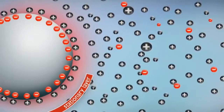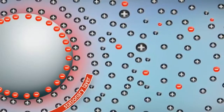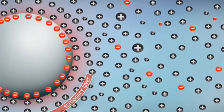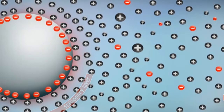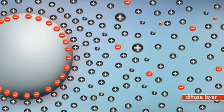Those ions attracted to the nanoparticle surface form what is called the Stern layer. Cationic ions neutralize the ionic surface charge; however, as ions are surrounded by water molecules, they are rather large and cannot neutralize the surface charge completely. The residual anion charge attracts further ions from the surrounding water, developing a second layer.